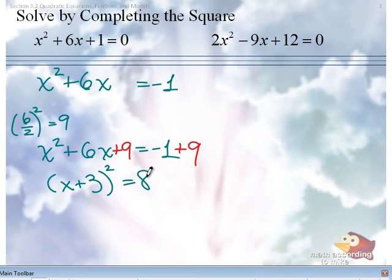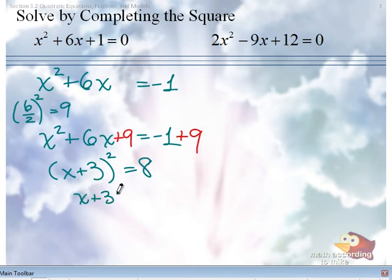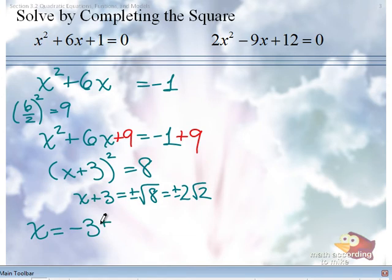So now notice we're back in our square root property format. We have a perfect square equal to number. So if you would, solve for x. So take the square root of both sides. Do not forget your plus or minus. What is the square root of 8 simplified to be? And finish this off by doing what to both sides? There you go. Subtracting 3 from both sides.